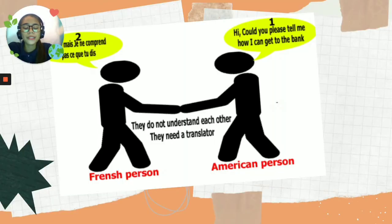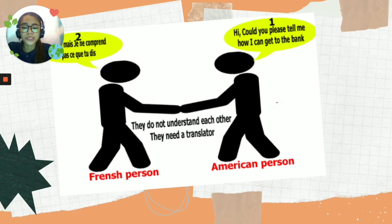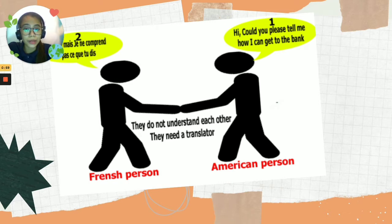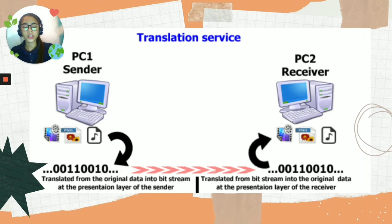For example, consider a situational example: we have a French person and an American person. They have different languages and cannot understand each other. They need a translator to communicate. Similarly in computers, the data composed of characters and numbers is transferred or translated into a machine-understandable format so they can communicate.